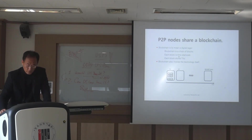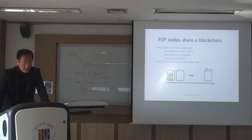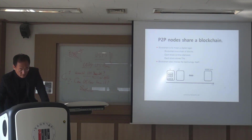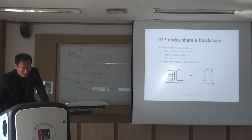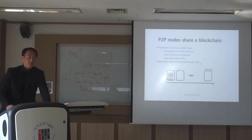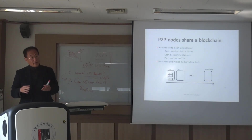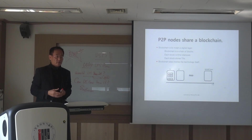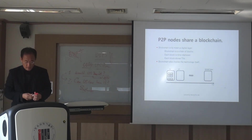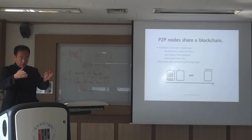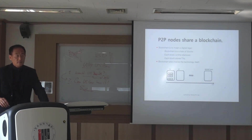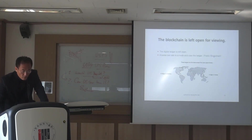Basically the block number represents time. Each block stores transactions — transaction one, two, all the way up to around a thousand — per block. Blockchain also implies the technology itself, so sometimes blockchain is used as a ledger and sometimes as a technology. The blockchain is left open for viewing — everyone is able to view it.